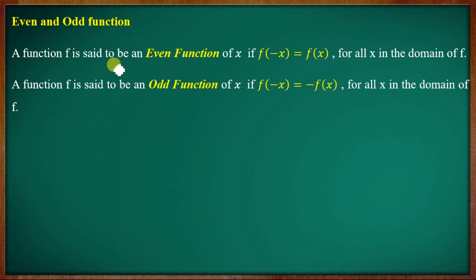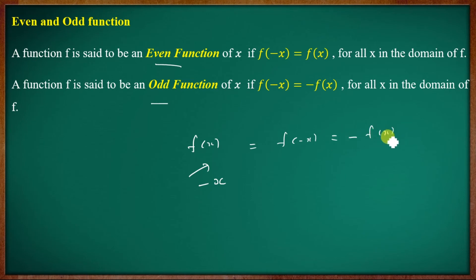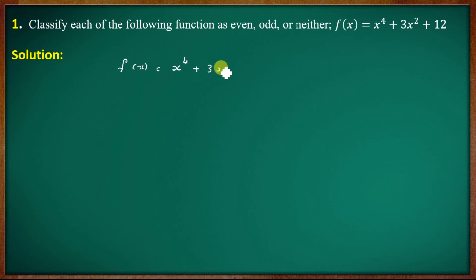A function f is said to be an even function if f of minus x equals f of x. Now consider the function f of x equal to x to the 4th plus 3x squared plus 12.